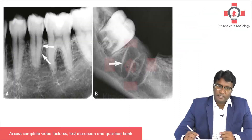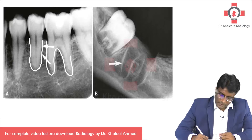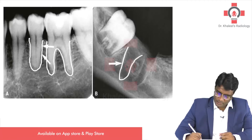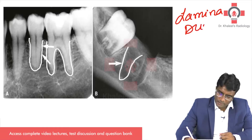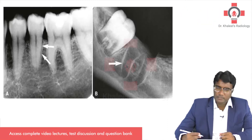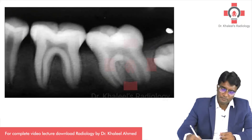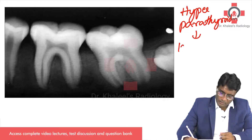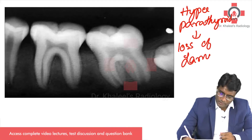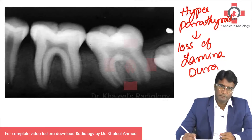Another important finding: there is a sclerotic margin seen adjacent to the teeth socket, called the lamina dura. Normally, lamina dura is present adjacent to the teeth socket as a sclerotic margin. But in hyperparathyroidism, there is loss of lamina dura — I do not see the sclerotic margin here. Loss of lamina dura is also a feature of hyperparathyroidism.